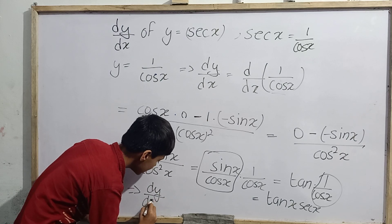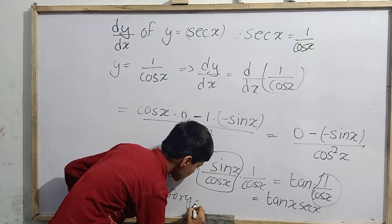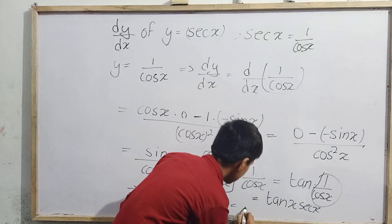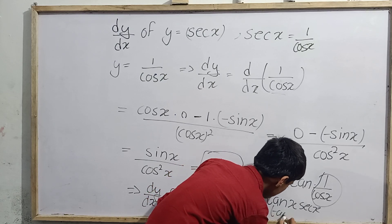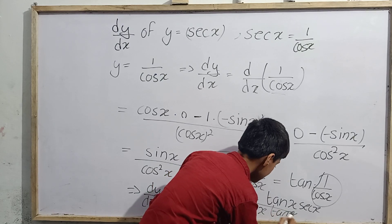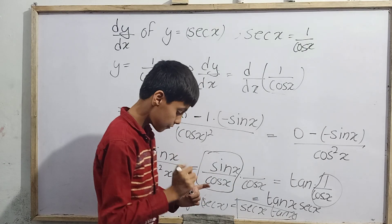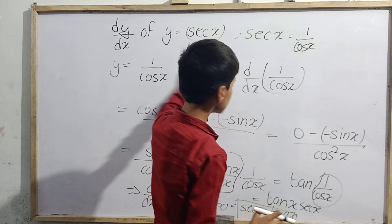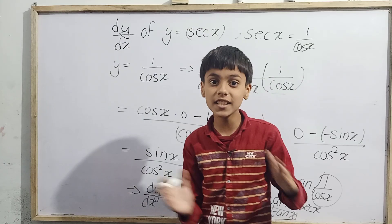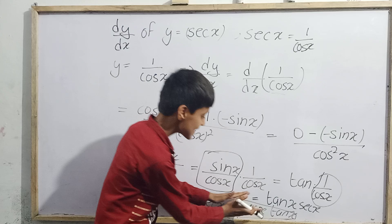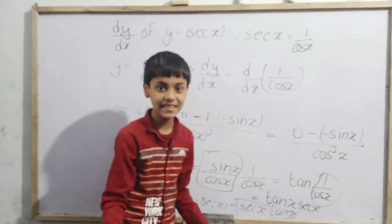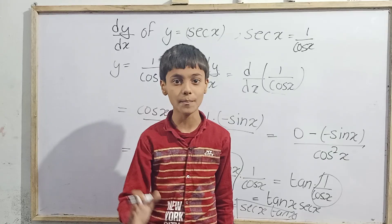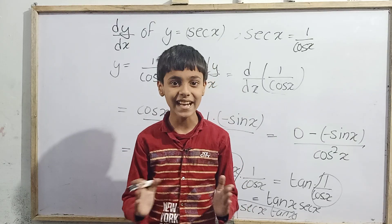So the final answer: dy/dx for y = sec(x) is sec(x)·tan(x). By this method, we have shown that if we differentiate sec(x) with respect to x, we get sec(x)·tan(x). So the differentiation of sec(x) is sec(x)·tan(x). That was today's topic on differentiation — thank you.